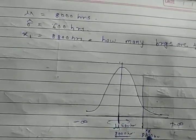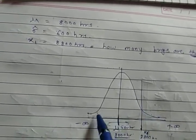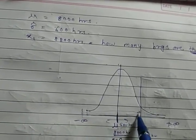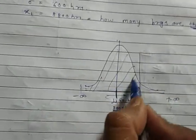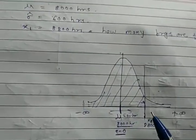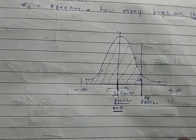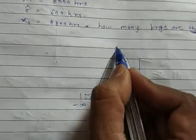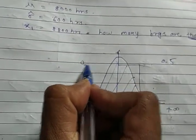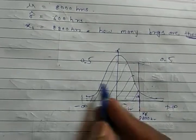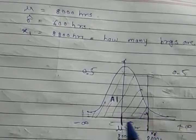We need to find the area from the start up to 8,800 hours — that is the area of interest for finding the number of bearings. The normal distribution curve has half the area equal to 0.5 on each side of the mean, totaling 1. I will split the area into A1 and A2.